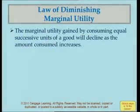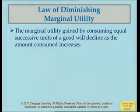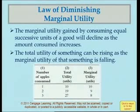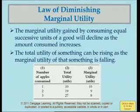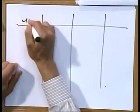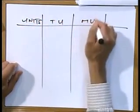What we're going to look at is a table that explains the concepts of total utility, marginal utility, and the law of diminishing marginal utility. The table has three columns: the first column shows the number of units (apples) consumed; the second column shows total utility measured in utils; and the third column shows marginal utility (MU).